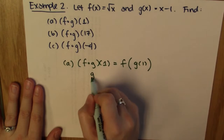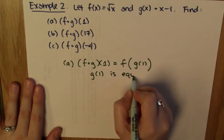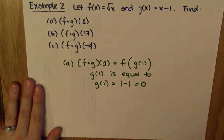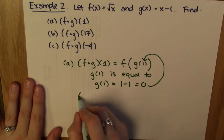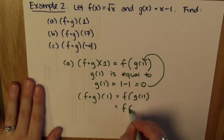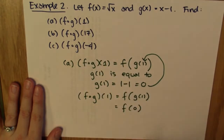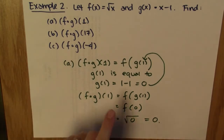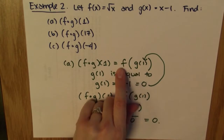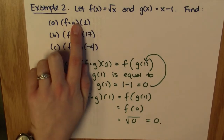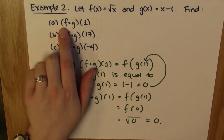What is g of 1? Everywhere I have x I plug in 1, so g of 1 is 1 minus 1, which is 0. I plug this into f, so f composed with g of 1 is f of 0. When I plug 0 into f, I get the square root of 0, which is 0. So f composed with g of 1 is equal to 0. Note that first I plug in to g and then I plug that result into f, even though they're written in the opposite order — we call this working inside out.